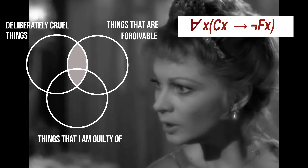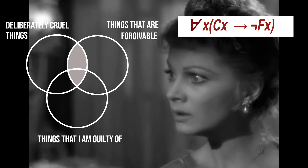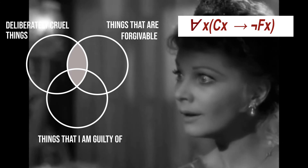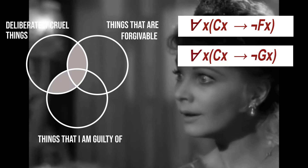And the one thing of which I have never, never been guilty. Our second premise is: all things that are deliberately cruel are not things I am guilty of.